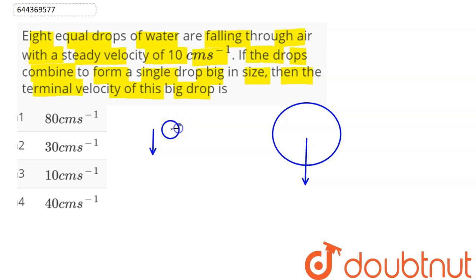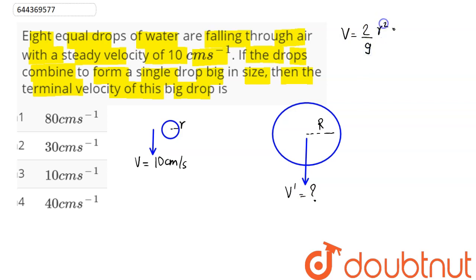Let's say the radius of each smaller drop is r, and its terminal velocity is given as 10 cm per second. The bigger drop has radius R, and we need to find its terminal velocity v dash. The terminal velocity formula is: v = (2/9) × r² × g / η × (ρ_s − ρ_l), where η is the coefficient of viscosity, g is acceleration due to gravity, r is the radius, and v is the terminal velocity.